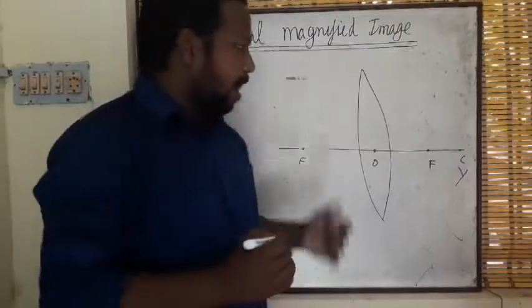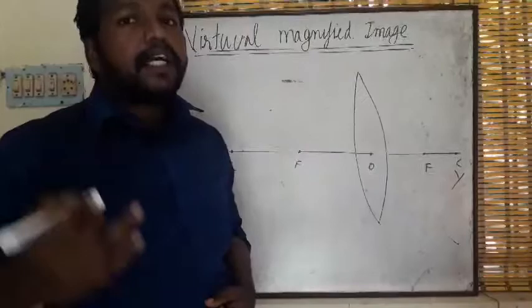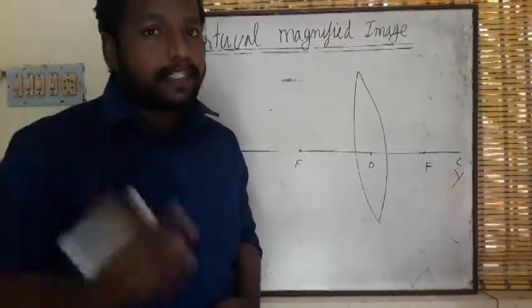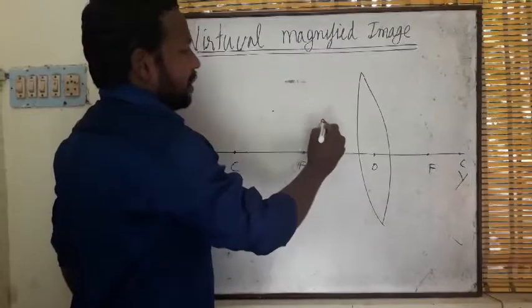The object should be placed between F and O. Then only we will get a magnified virtual image. This is the working principle of a simple microscope. I place the object here. The parallel ray